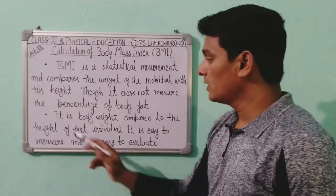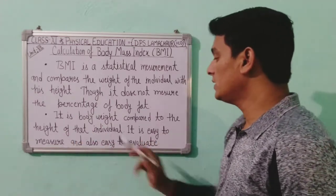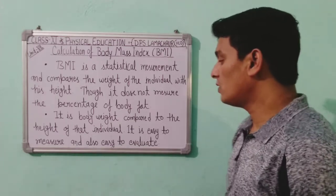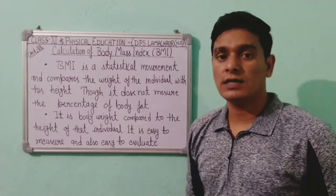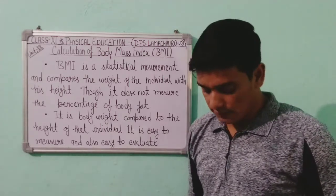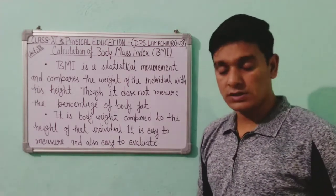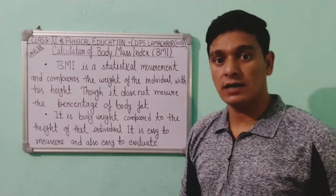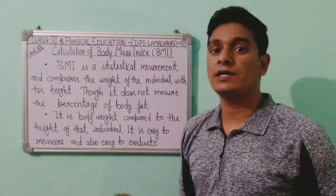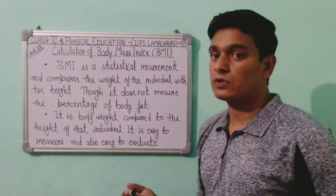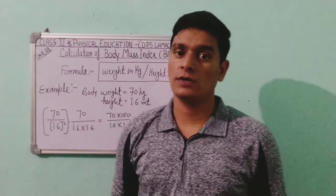BMI compares the body weight to the height of the individual. It is easy to measure and also easy to calculate. To find BMI, we take the weight of a person in kilograms and grams, and we take the height of a person in meters and centimeters.